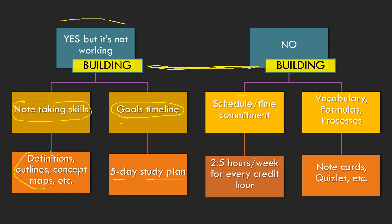In that case, first make sure they understand the time commitment — going to college requires time outside of class to study. They can't just go to class, go to tutoring, and call it done. The general rule of thumb is two and a half hours for each credit hour per week. So for a five-credit-hour chemistry class, that's 12.5 hours per week of studying outside of class, not including class time.